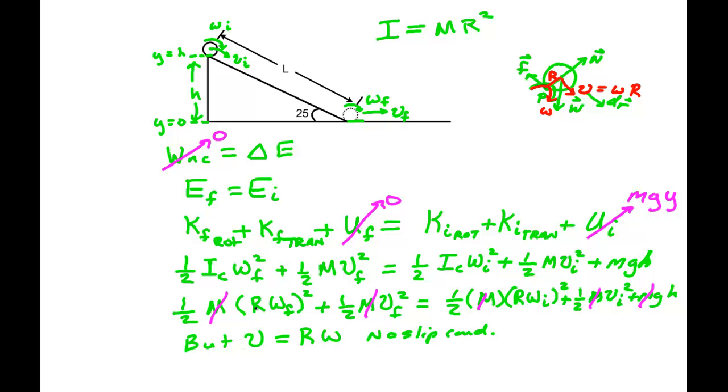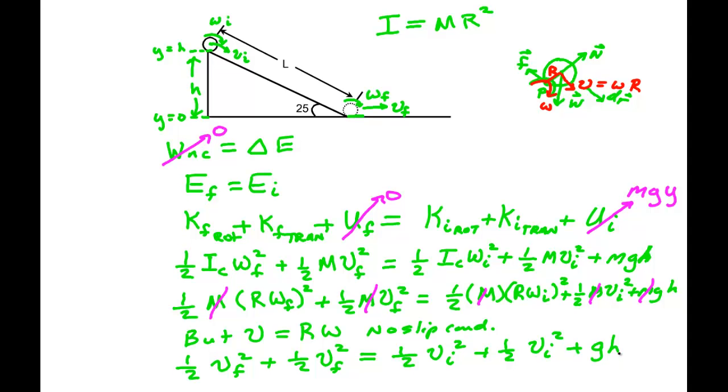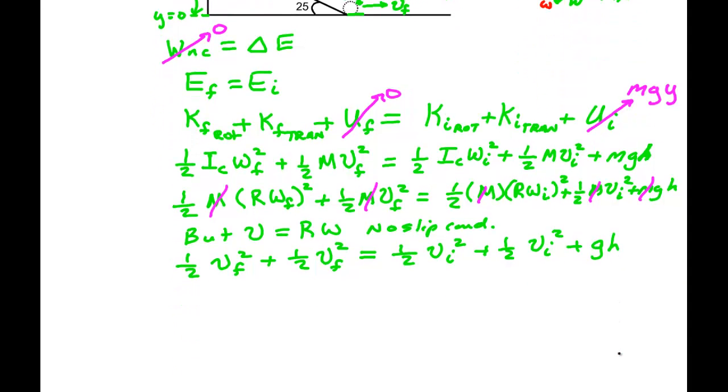And what we can do, as you've seen, I've already, when I brought the R squared in, I already connected R Omegas because I knew this was going to happen. So I can replace it with these. So we get one half V final squared plus one half V final squared is equal to one half V initial squared plus one half V initial squared plus G H.